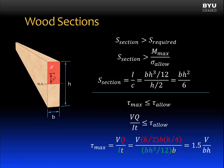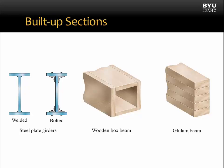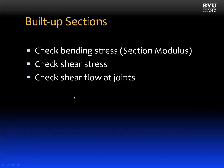The final type of sections we'll consider are built-up sections. Built-up sections can be made of steel, such as steel plate girders, or wood, such as a box beam or glue-lam beam, or any other material. Built-up sections are typically unique sections used when common sections will simply not work. They can be made of metal plates that are either welded or bolted together, or boards that are nailed or glued. In built-up sections, we will check bending stress using the section modulus, check shear stress, and also check shear flow at the joints — as discussed in Unit 6.4.